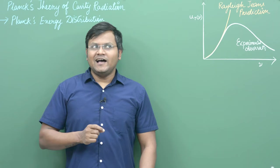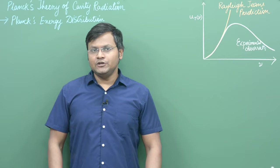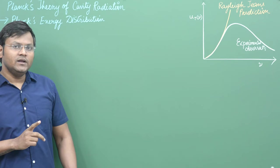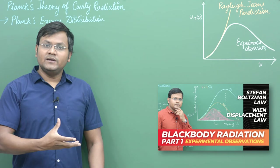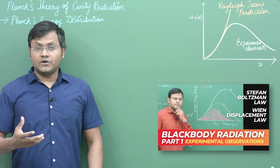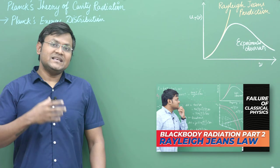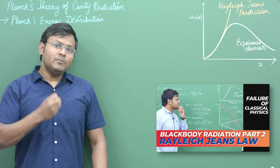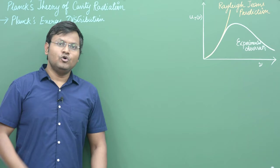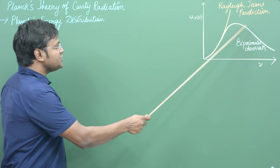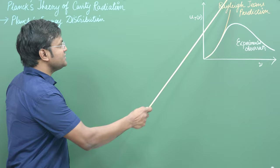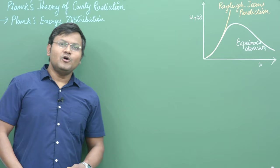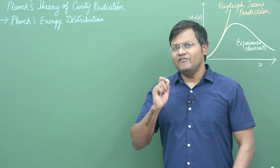We would have to make new assumptions about how matter and radiation interact, and more specifically how radiation is emitted by matter. I've already made two distinct videos on this topic: the first video was regarding the various experimental observations of blackbody radiation like Stefan's law, Wien's displacement law, etc., and the second video was regarding the Rayleigh-Jeans law — a classical explanation of the blackbody radiation spectrum.